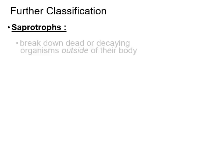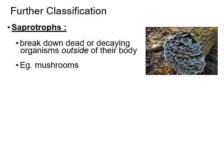Saprotrophs are organisms that break down dead or decaying organisms outside their body. Mushrooms are decomposers because they're fungi, but they're also saprotrophs. They attach to a substrate — you'll see fungus on dead wood or sometimes on trees — and they excrete chemicals that break down the bark or dead material into nutrient particles, which the mushrooms then absorb. So a mushroom can be a decomposer, a saprotroph, and also a consumer.